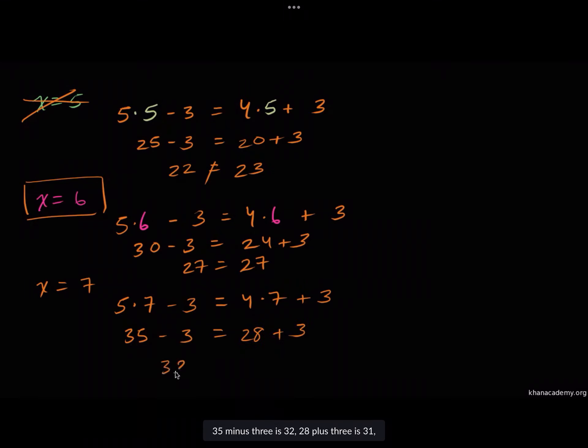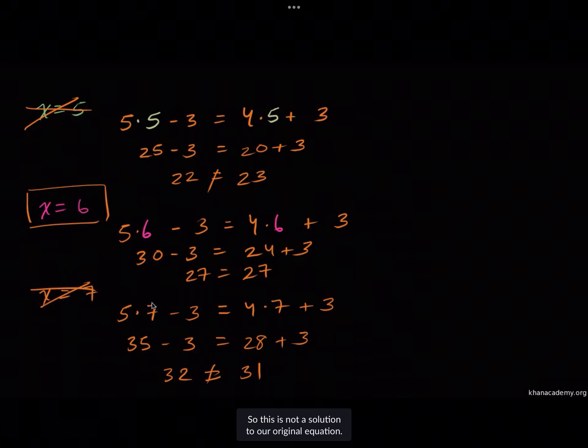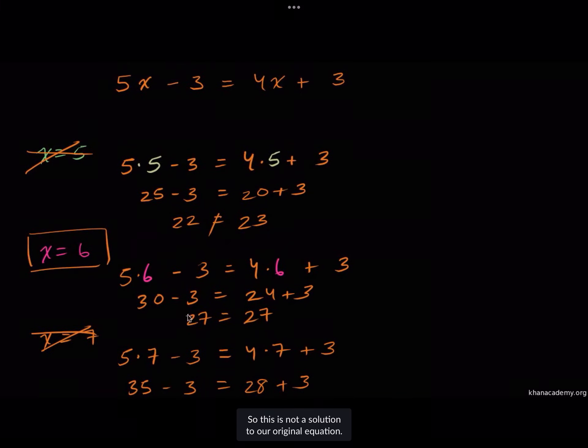So 35 minus three needs to be equal to 28 plus three. 35 minus three is 32. 28 plus three is 31. These do not equal each other, so this is not a solution to our original equation.